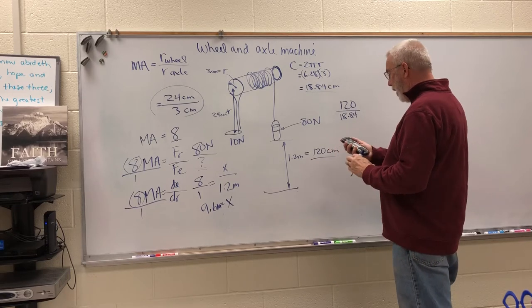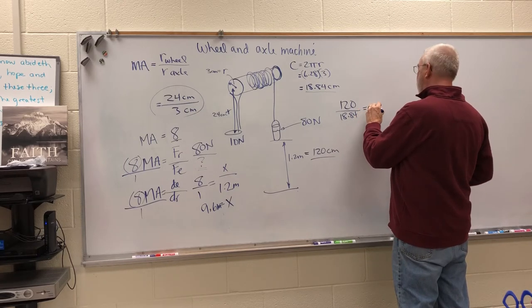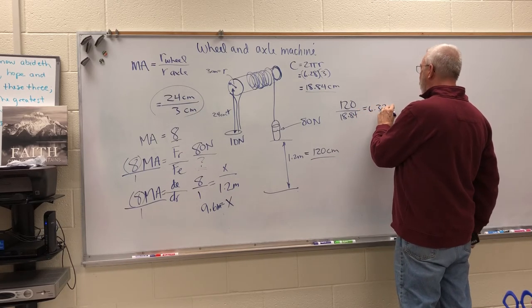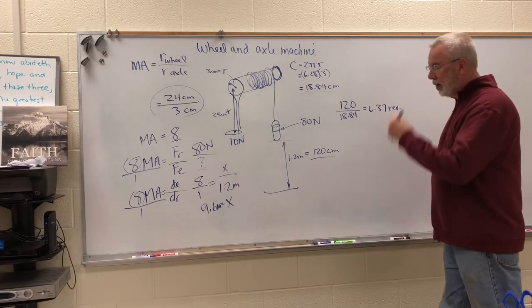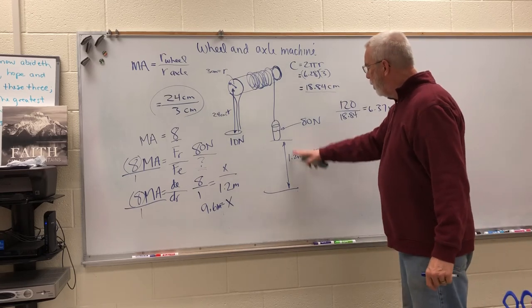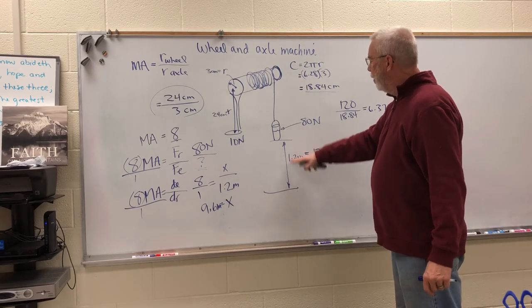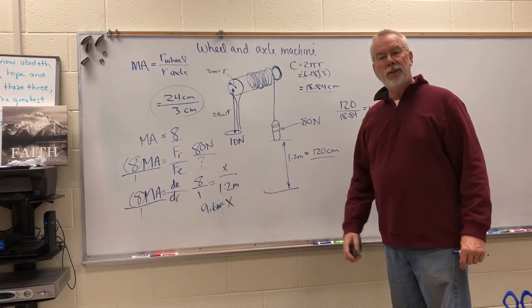And that shows me that 6.37 revolutions will, if you turn that handle 6.37 revolutions, you'll be able to draw up that 1.2 meters of string onto the axle pulling the bucket the distance at the same time.